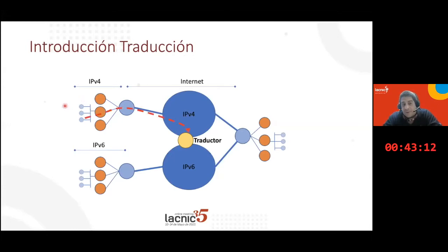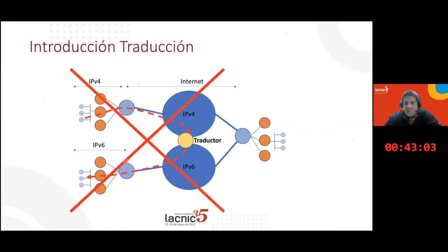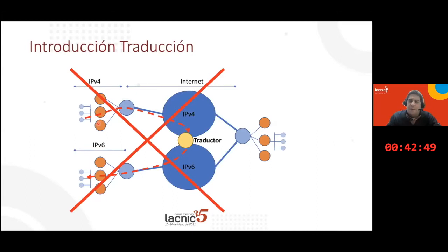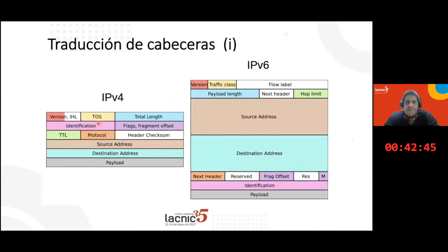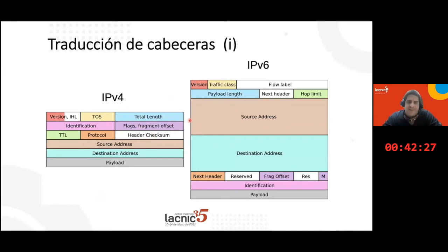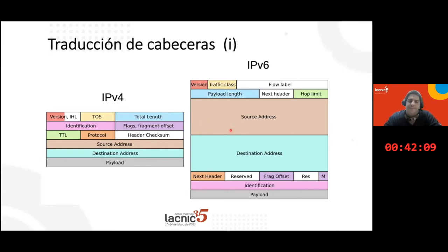If I have an IPv4 network and want to communicate with an IPv6 network, I can't do that directly because IPv4 and IPv6 are not compatible — a host that speaks IPv4 cannot communicate with an IPv6-only destination. Looking at the screen, we can see the IPv4 header and the IPv6 header — they are very different. To translate from one to the other, we introduce the NAT64 translator. It's like having two people speaking two different languages.